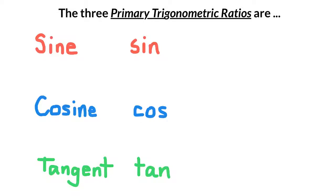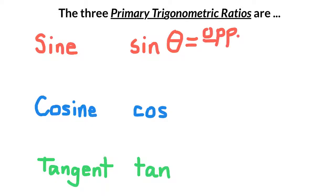So let's just call your reference angle theta — that's a Greek letter. If theta is your reference angle, the sine of that angle is equal to the opposite side divided by the hypotenuse.